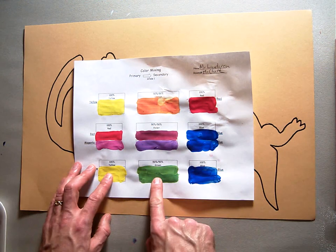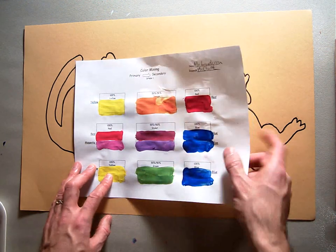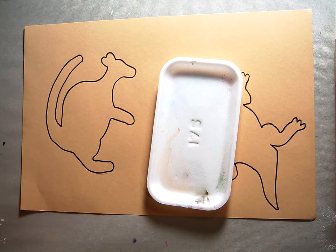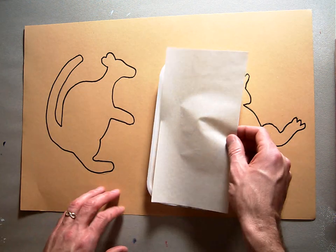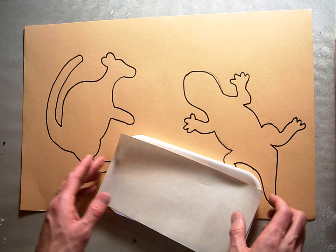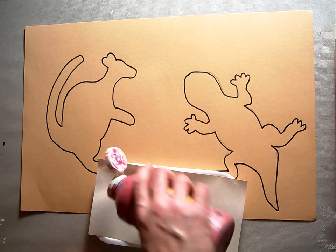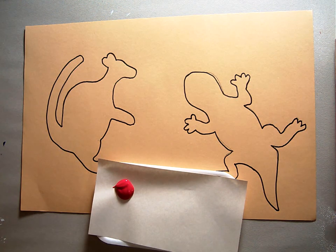So you are going to get yourself a palette, and you're going to also need a palette paper, and then you're going to choose two primary colors. I am going to start with red and I'm going to start with yellow.